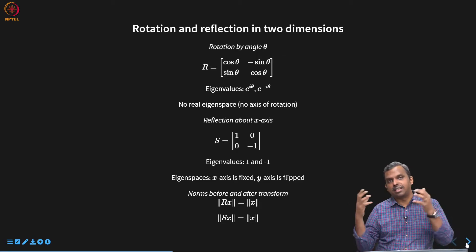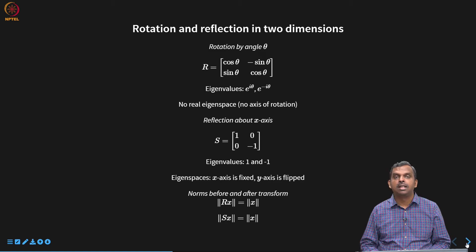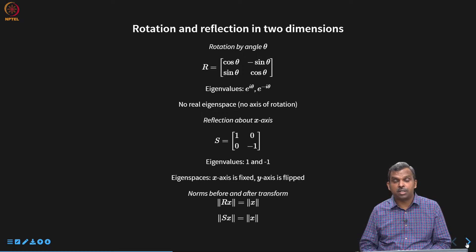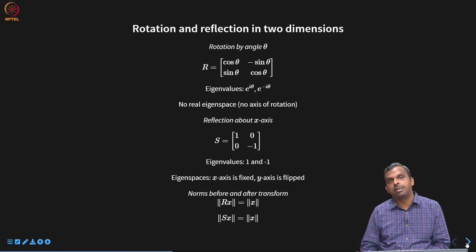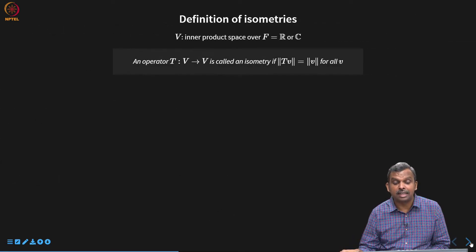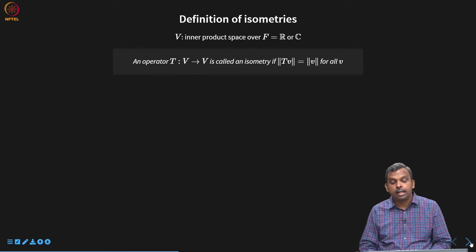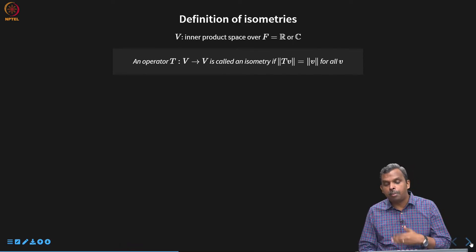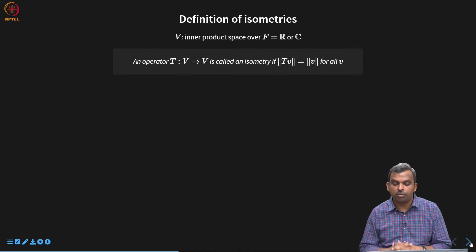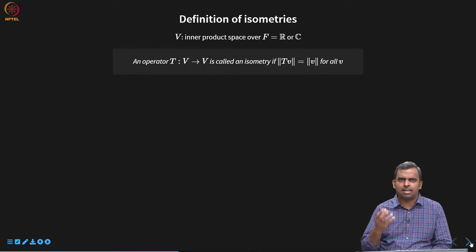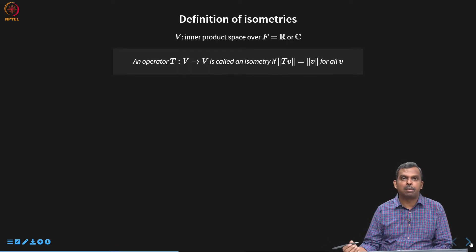Our question now is how this generalizes to an arbitrary vector space. When is an arbitrary operator an isometry? What are the characterizations for isometries in arbitrary, possibly larger-dimensional, or abstract vector spaces? Here is the formal definition: given an inner product space over ℝ or ℂ, an operator T from V to V is called an isometry if ‖Tv‖ = ‖v‖ for all v. The norm is not affected by T.